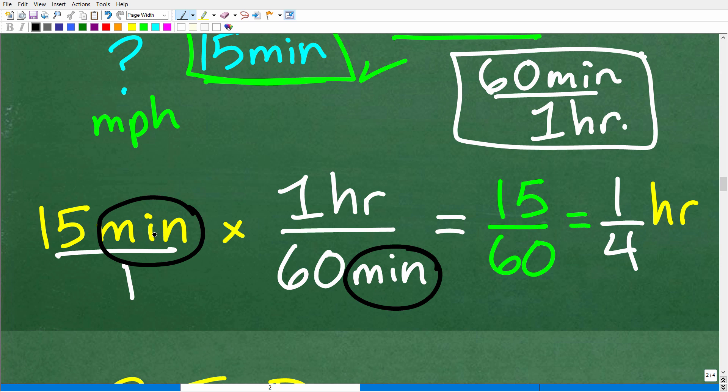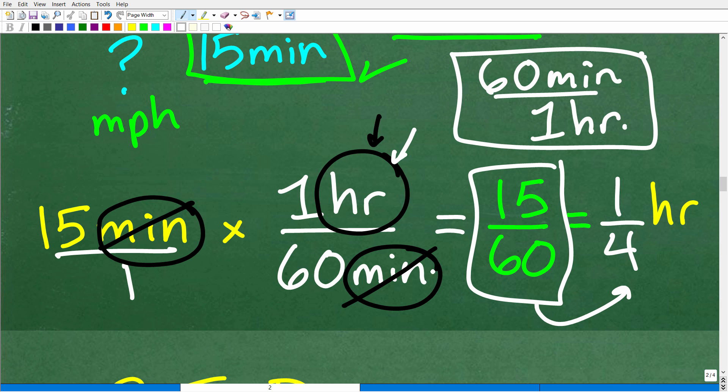And basically what we want to do, the objective is to cross cancel the minutes. So this minute right up here, this unit of measure is in the numerator. I can cross cancel this with this minute down here in the denominator. And that leaves me with just hours. So I'm going from 15 minutes, I get rid of the minutes and I'm going to be left with hours, but it's going to be 15 times one over 60. So 15 times one over 60 is the same thing as 15 over 60. And I can reduce this down, of course, to the fraction one fourth hours.